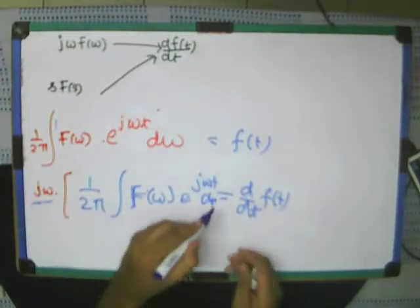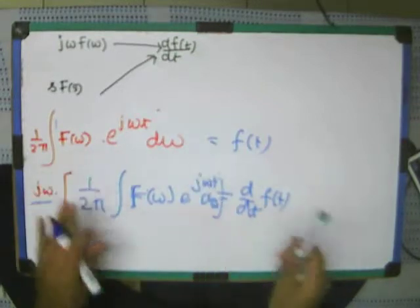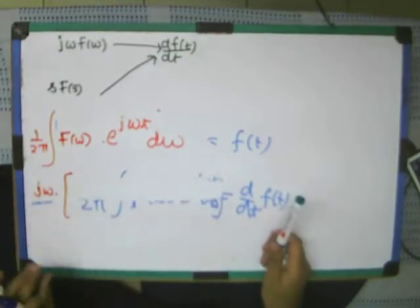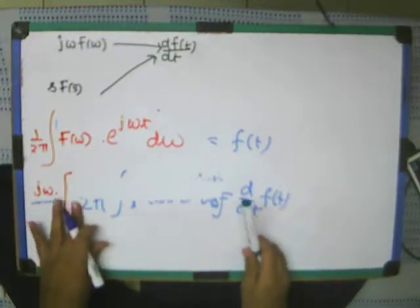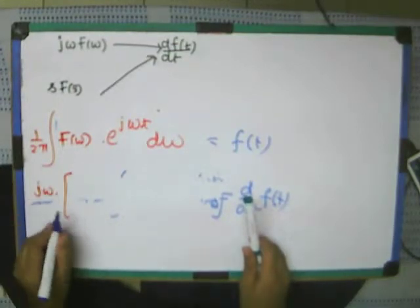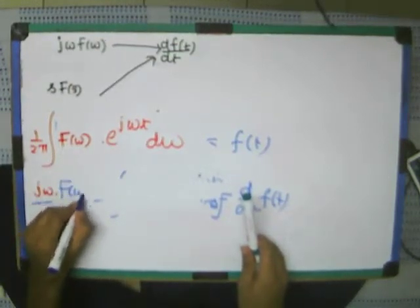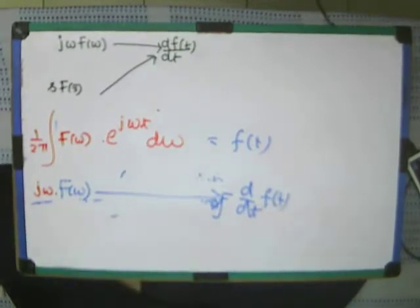So this rest part, can't I again write it as... this. Okay. So in that sense, this jω times, if I take this jω inside, that means that jω times F(ω) has inverse Fourier transform d/dt of f(t). As simple as that.